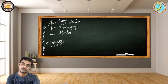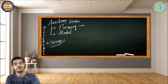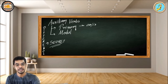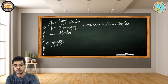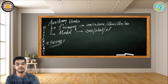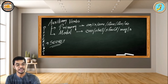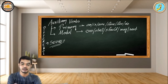But before we start discussing the difference, let's have a look at what are the primary auxiliaries. The primary auxiliaries are words like am, is, are, have, do, has — these are the primary auxiliaries. And what are the modal auxiliaries? The modal auxiliaries are like can, shall, will, or should. Then you have modal auxiliaries like may, and also like need. These are the modal auxiliaries.